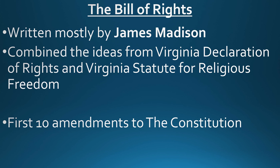The two sides reached a compromise: the creation of a Bill of Rights. Written mostly by James Madison, the Bill of Rights became the first ten amendments to the Constitution of the United States. It drew upon ideas from several documents of the time period, particularly the Virginia Declaration of Rights and the Virginia Statute for Religious Freedom. The Bill of Rights guaranteed the rights of the individual and the states, and this was the final push that led to the ratification of the Constitution.